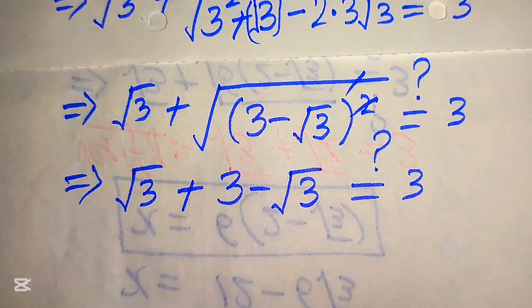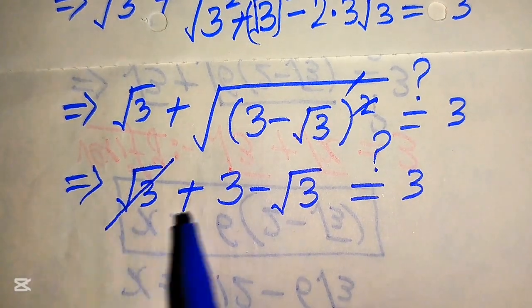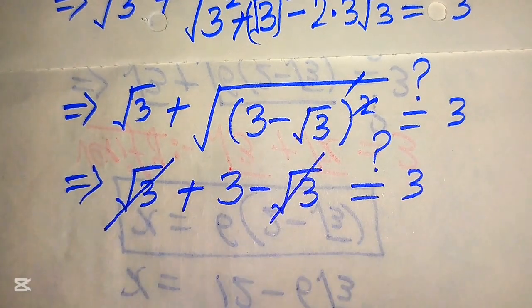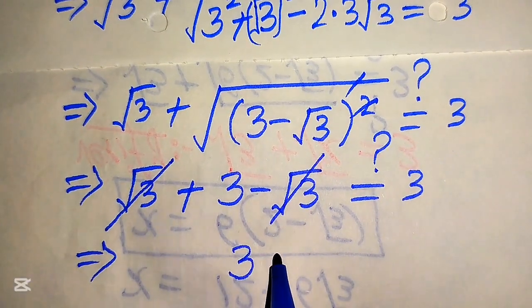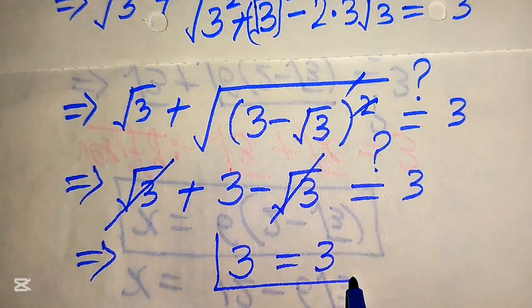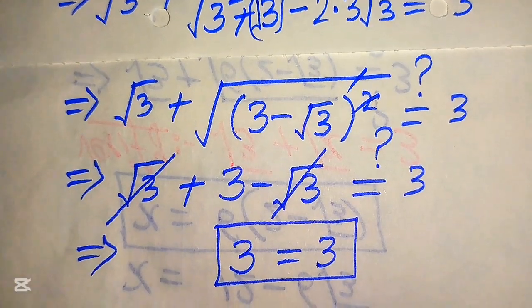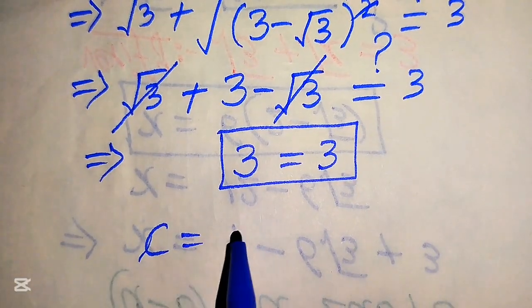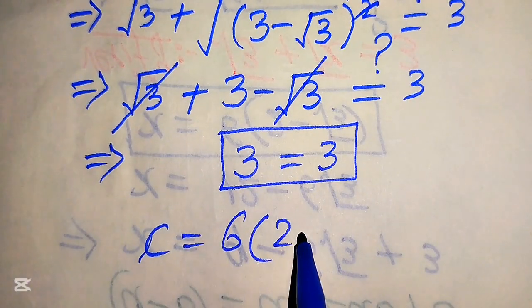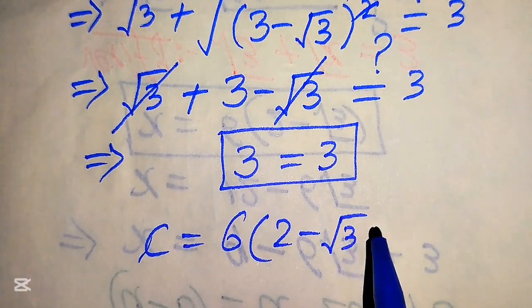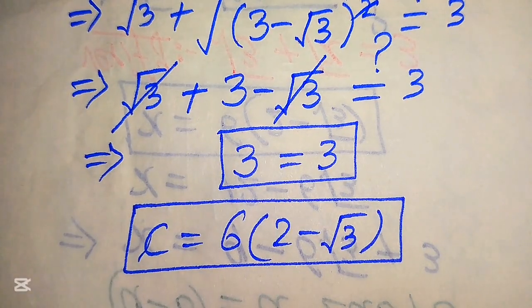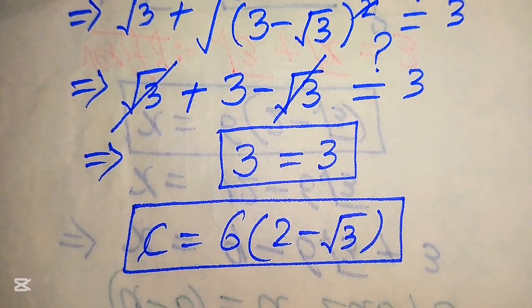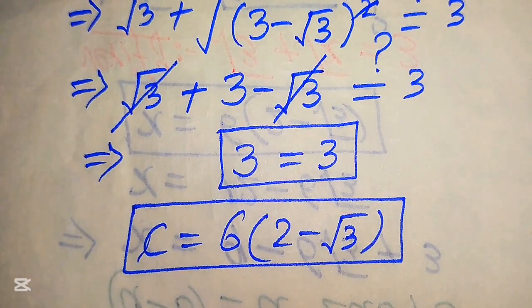Taking the square root of (3 minus √3) squared gives 3 minus √3. So we have square root of 3 plus (3 minus square root of 3). The positive √3 and negative √3 cancel each other out, and we get 3 equals 3. This confirms that c equals 6 times (2 minus square root of 3) satisfies the original equation. That's our final answer — thank you for watching, please subscribe for more videos.